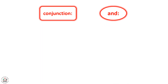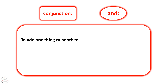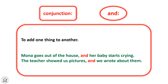We use 'and' to add one thing to another. For example: Mona goes out of the house and her baby starts crying. The teacher showed us pictures and we wrote about them.